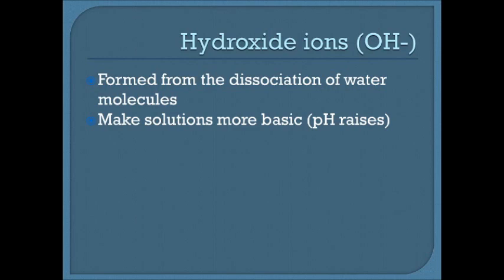Hydroxide ions are usually abbreviated OH. They're formed from the dissociation of water molecules. When water molecules break into hydroxide ions and hydrogen ions, hydroxide ions make solutions more basic, so the pH raises. Water molecules don't dissociate in pure water very often, so the number is generally pretty low.